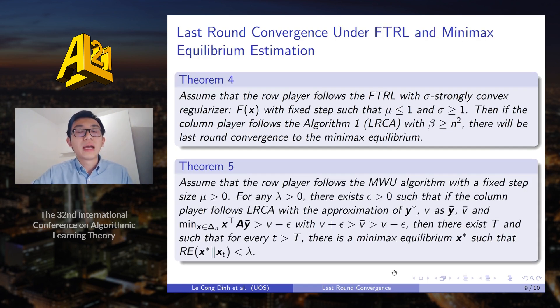Next, we provide the analysis of LRCA in a more general class of no regret algorithms, FTRL with strongly convex regularizers. And then we provide a similar result saying that when the column player follows LRCA, then there will be last round convergence to the min-max equilibrium.